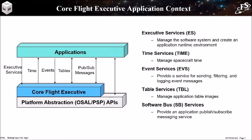The CFE provides five services to applications. Executive services manages the application runtime environment and keeps track of system resources used by an app. The time service manages time and allows apps to retrieve time for things like timestamping data and computing delta time between events. The event service allows apps to send timestamped text events with parameters, very similar to a printf function call in C.